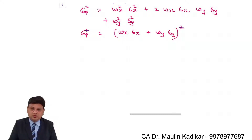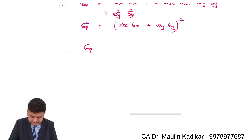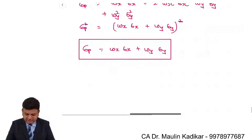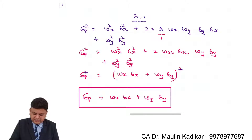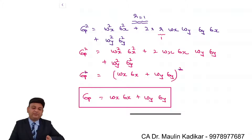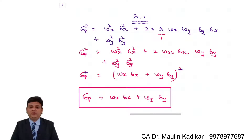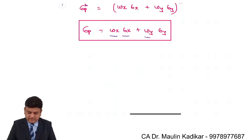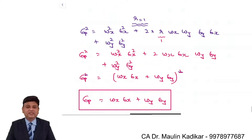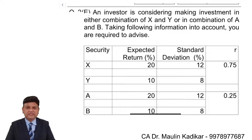Since σ_p² = (w_x · σ_x + w_y · σ_y)², taking the square root on both sides, σ_p = w_x · σ_x + w_y · σ_y. That is the standard deviation of the portfolio calculated using a simple weighted average formula. When the correlation coefficient between securities is perfect positive, you compute the standard deviation of the portfolio the same way you compute portfolio return — taking the weight of security X times its standard deviation plus the weight of security Y times its standard deviation.